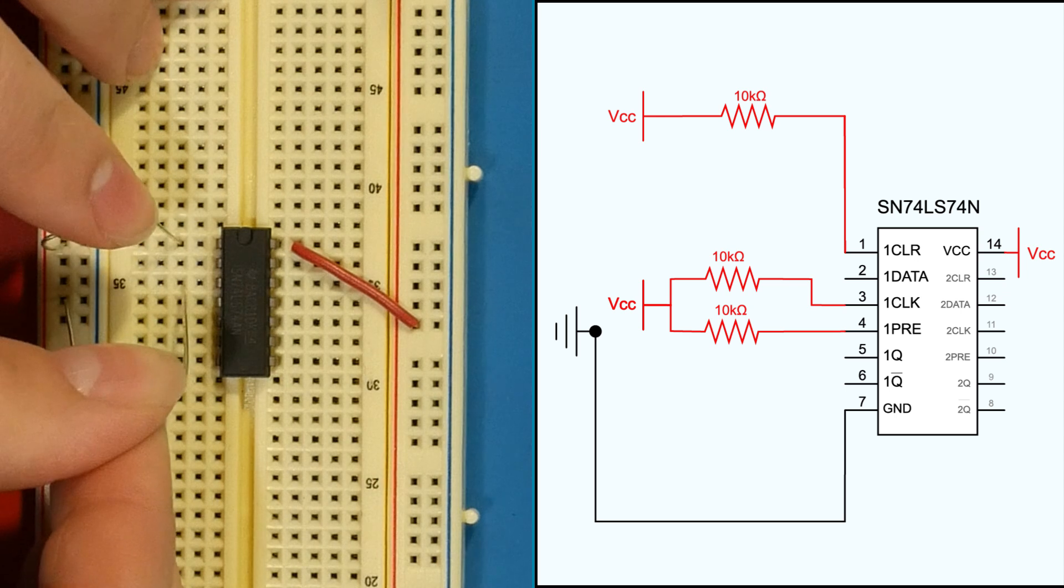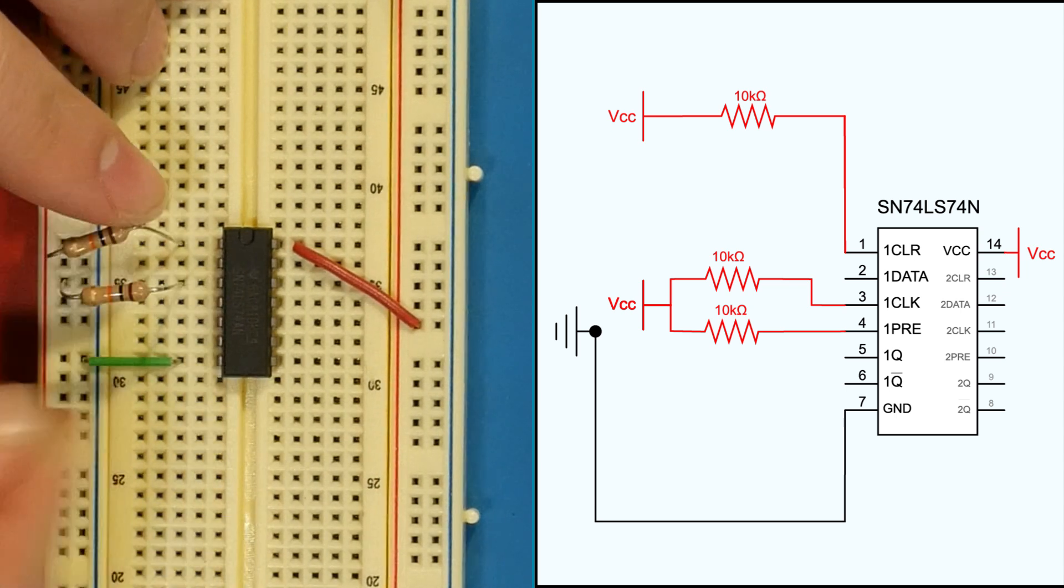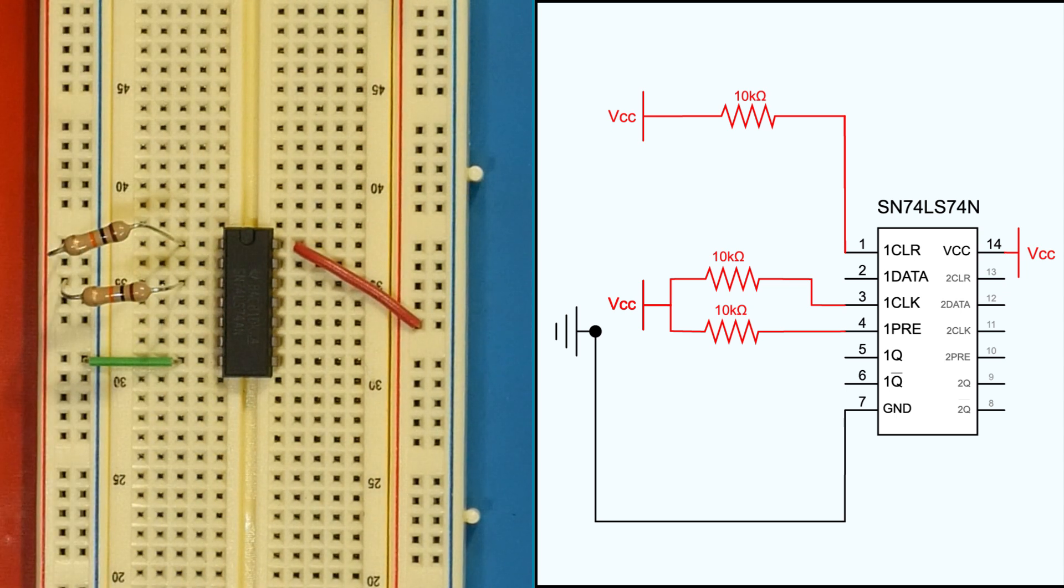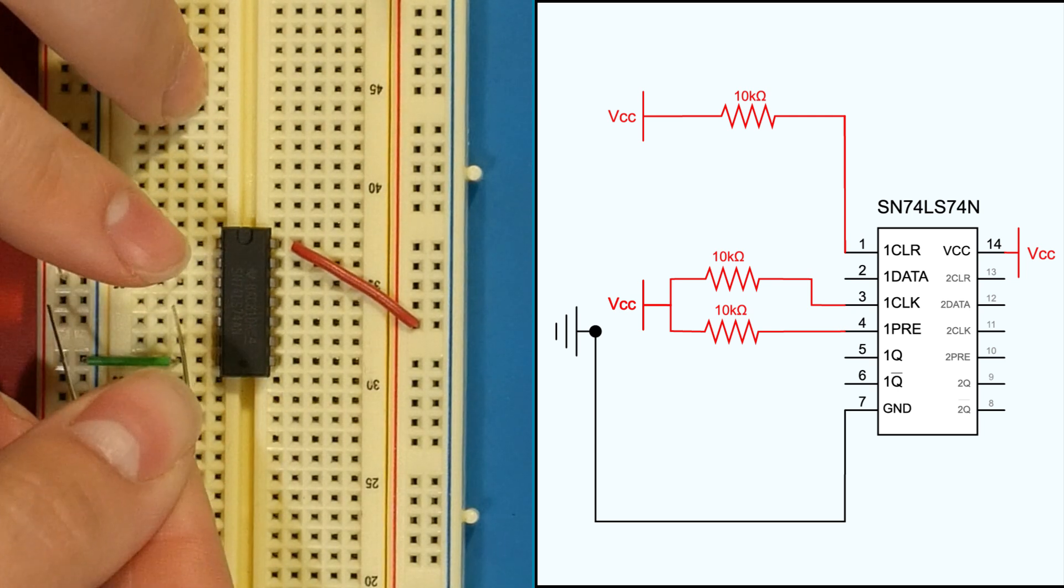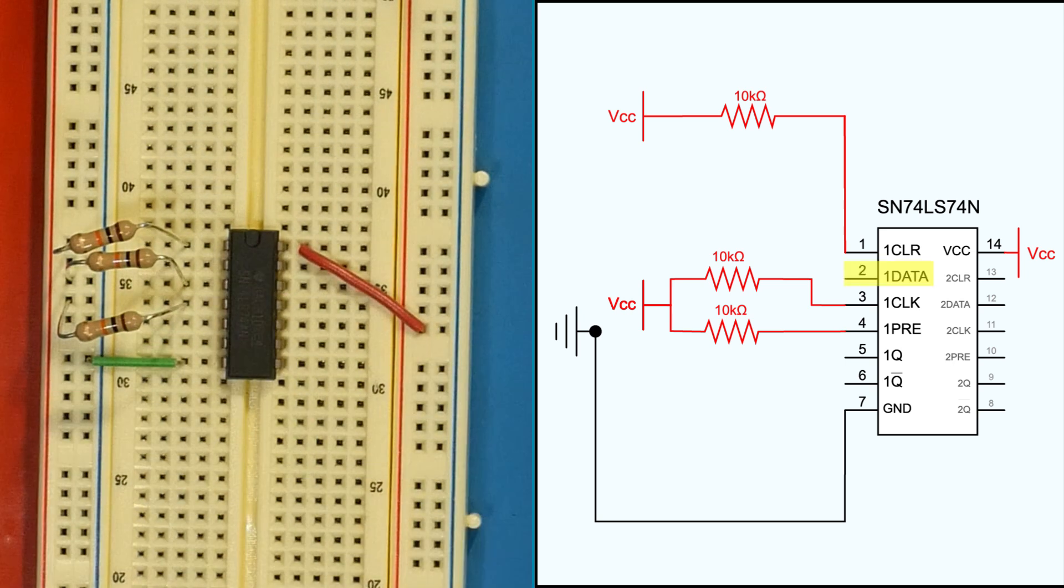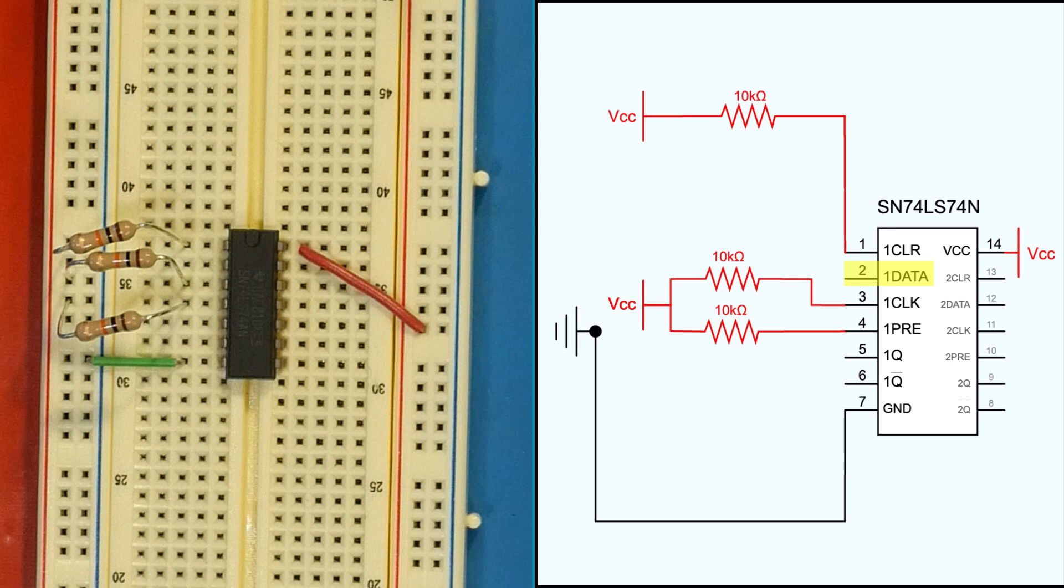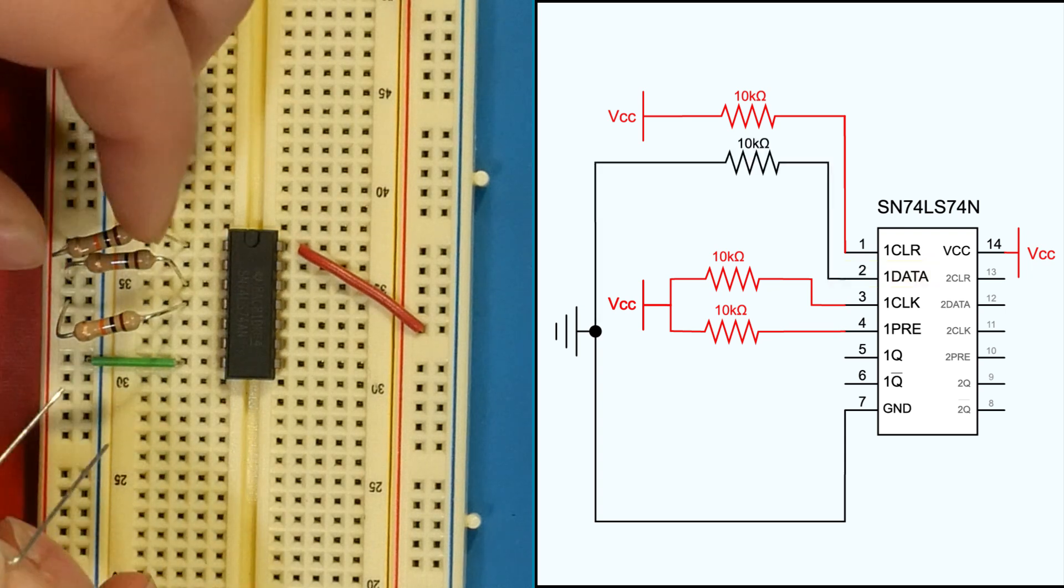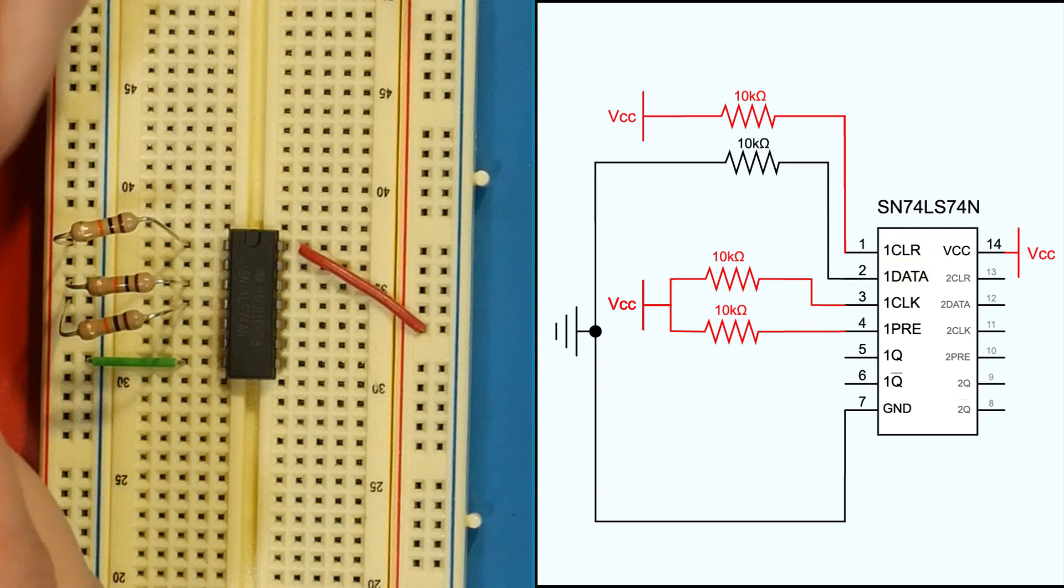Preset, clear, and clock are active low inputs. To make their default state inactive, they should always be connected to VCC. So we'll do this using a 10 kiloohm pull-up resistor for each. The data input works differently. It's basically active high, going high when connected to VCC and low when connected to ground. So we'll use the resistor to connect pin 2 to ground to make its default state low.